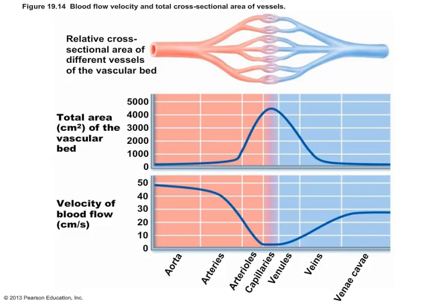Capillaries are typically 1 mm or less in length, with a diameter of around 8 to 10 microns — just larger than a red blood cell. Despite their small size, we have far more capillaries than arteries or veins, giving capillaries a much greater overall cross-sectional area — around 4,500 cubic centimeters, approximately 5 feet square. This tremendous area causes blood to lose pressure and slow down in velocity as it reaches the capillaries.